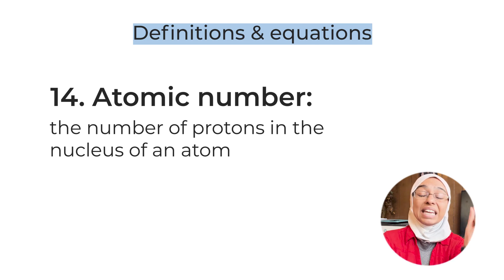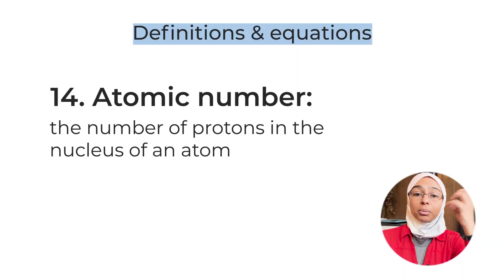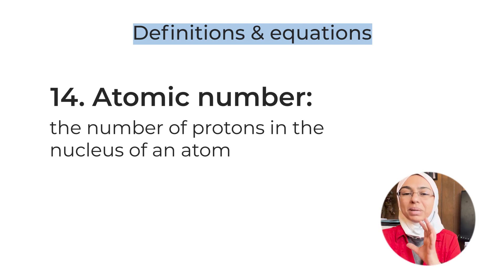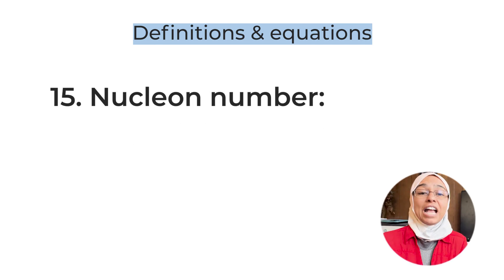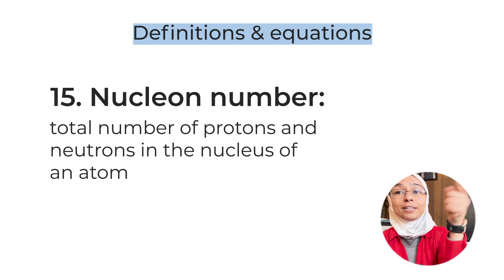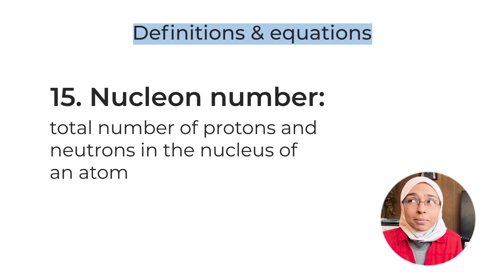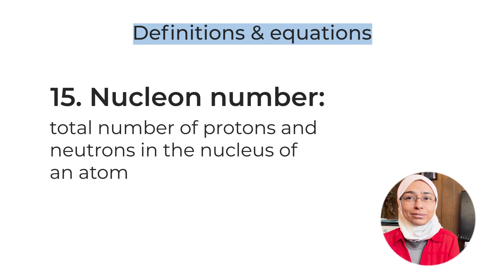Definition number fourteen: atomic number — the number of protons in the nucleus of an atom. If this question is worth two marks, make sure you write both 'number of protons' and 'in the nucleus of an atom.' Definition number fifteen: nucleon number — the total number of protons and neutrons in the nucleus of the atom. Atomic number and nucleon number are not commonly asked as direct questions, but every chemistry student must know them as they are fundamental.